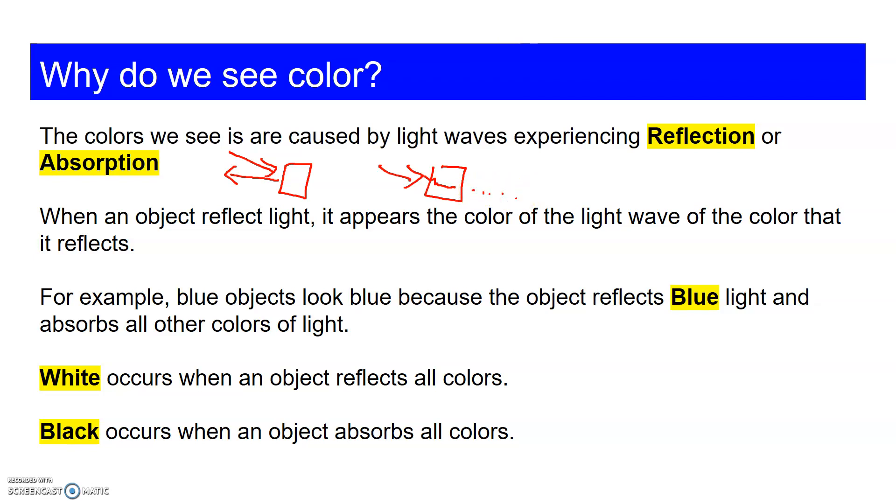When an object reflects light, it appears the color of the light that it reflects. For example, blue light causes the object to look blue. When we see a blue object, the object is absorbing all the other colors but blue. It reflects blue back to your eyes. We see a red object because it reflects red light back into our eyes and absorbs all the other colors.